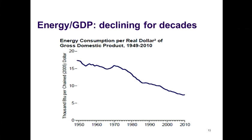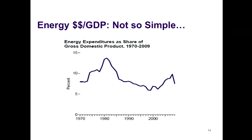Looking at energy spending as a share of GDP, that's not so stable — we cruise along and then boom, we move from something like 8% of GDP to something like 14% of GDP to pay the energy bill over a few years. That volatility is one component of what people think of as the energy problem. Prices move, and that is a source of concern.